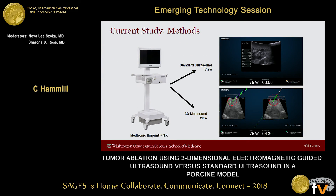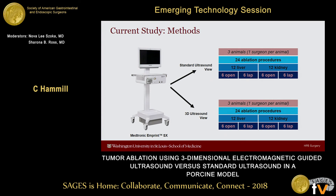This shows the standard ultrasound view on the top screen that the surgeon saw, and then the 3D guidance ultrasound view. The surgeons performed two laparoscopic targeting ablations in one kidney and two laparoscopic ablations in one lobe of the liver. Then we did a laparotomy and performed two open ablations in the other kidney and two open ablations in the other side of the liver. In total, across three surgeons, there were 48 ablation procedures — half with guidance and half without.